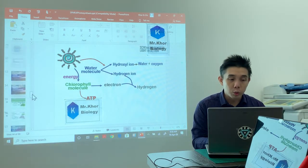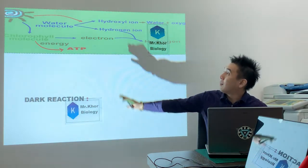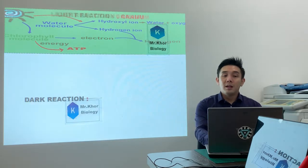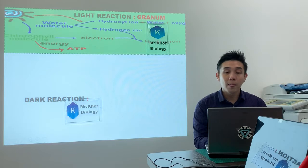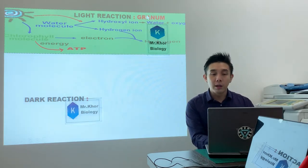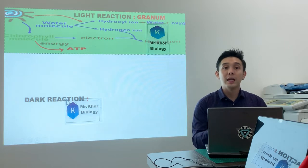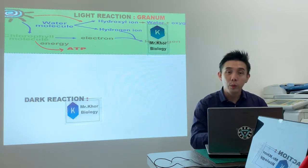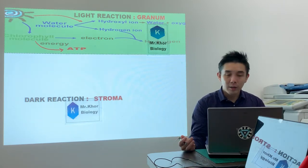So with that, moving on to dark reaction. This is the schematic diagram which I have just taught you. This is for light reaction which occurs in granum. Light reaction occurs in granum. Dark reaction occurred in the fluid of chloroplast - what do we call it? Stroma.